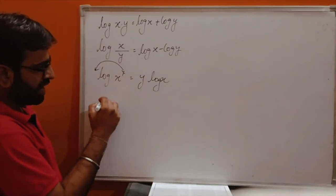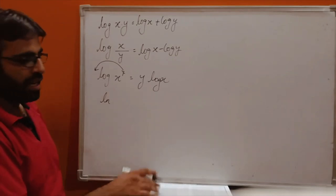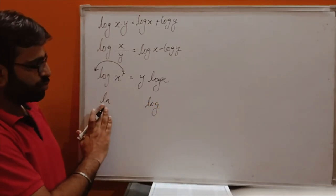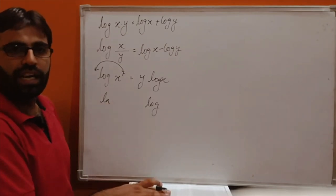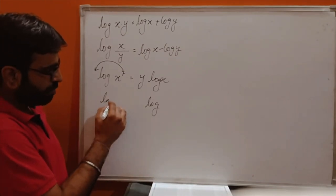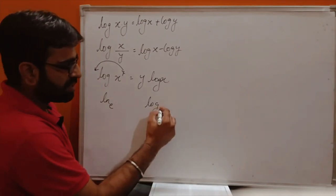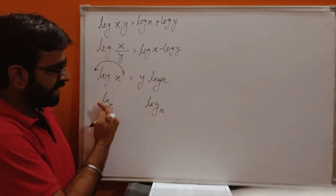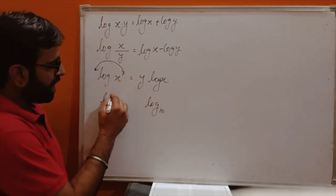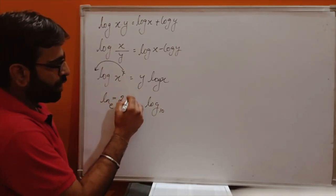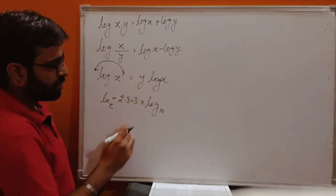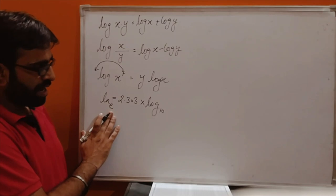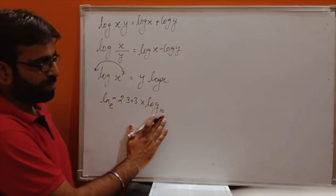Now we have a relation between natural log (ln) and log. ln has base e and log has base 10. To convert ln to a log value, we multiply by 2.303. So that is the value of natural log — it has base e, while log has base 10.